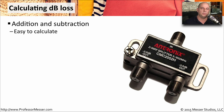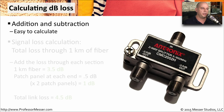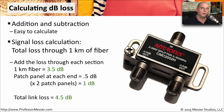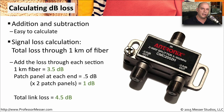Fortunately, the calculation of decibels is very easy — it's just addition and subtraction. For example, let's calculate signal loss through a fiber connection. Say we have two buildings connected by 1 kilometer of fiber. The fiber manufacturer will tell us we can expect about 3.5 dB of loss over that entire kilometer. We can even measure it on both sides of the fiber to see exactly what the loss is, and we'll probably see somewhere around 3.5 dB.